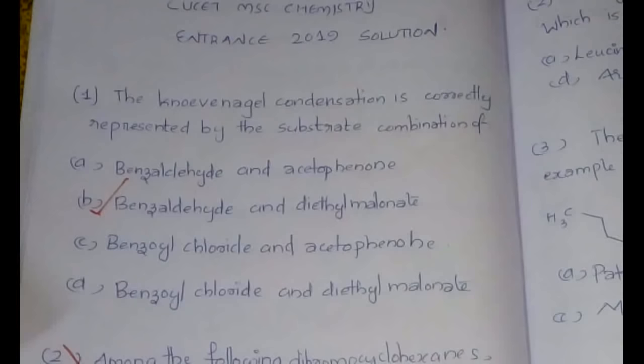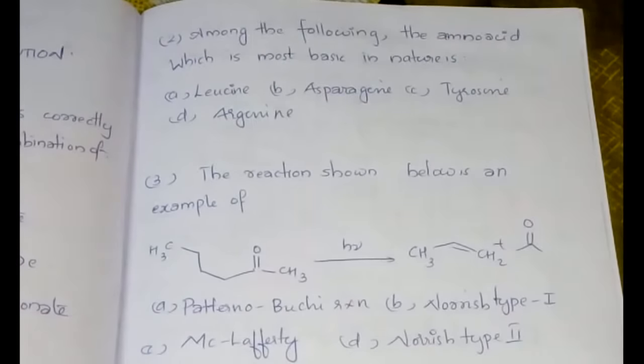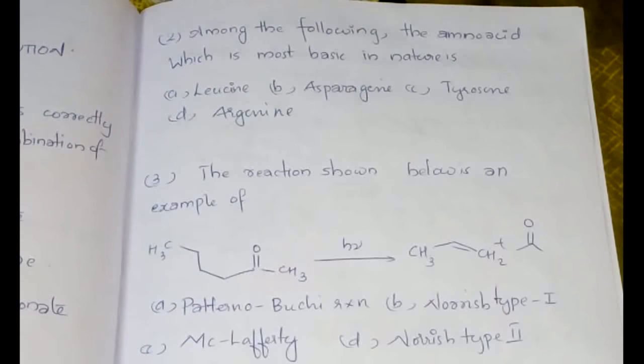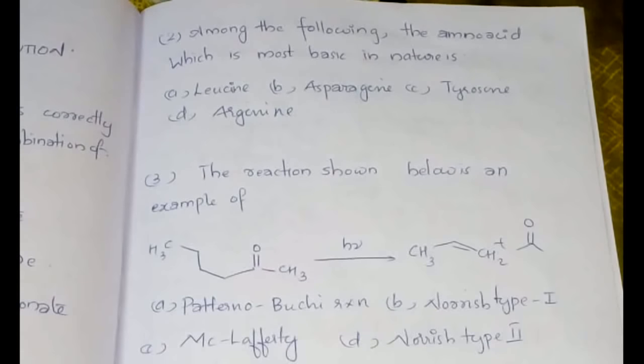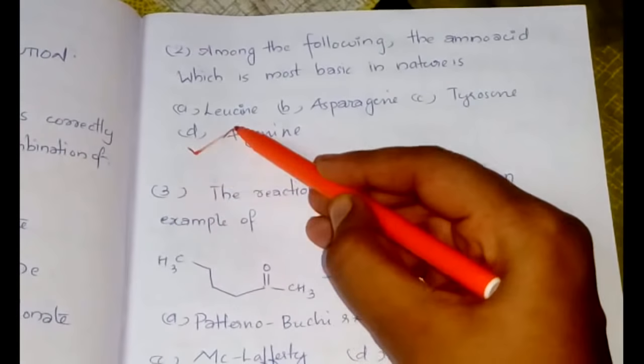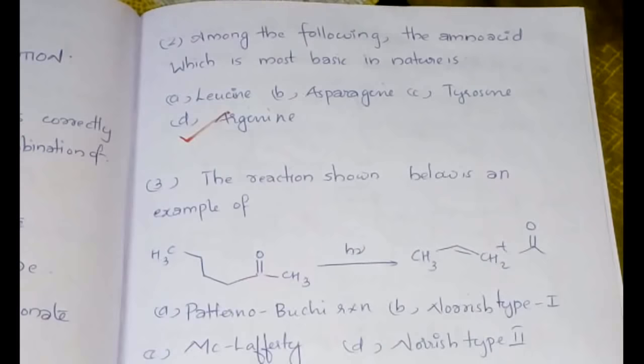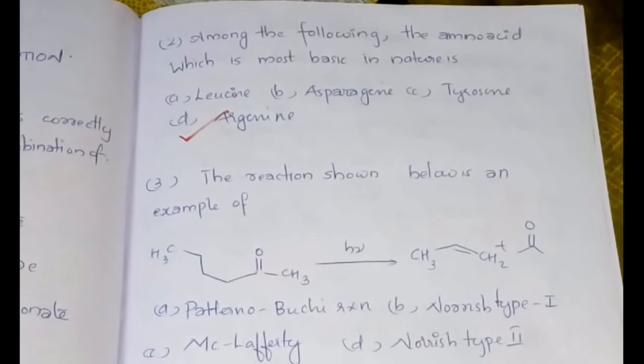Among the following, the amino acid which is most basic in nature: there are three amino acids that have basic side chains, which are lysine, arginine, and histidine. Here only arginine is given, and therefore definitely that should be the most basic amino acid.